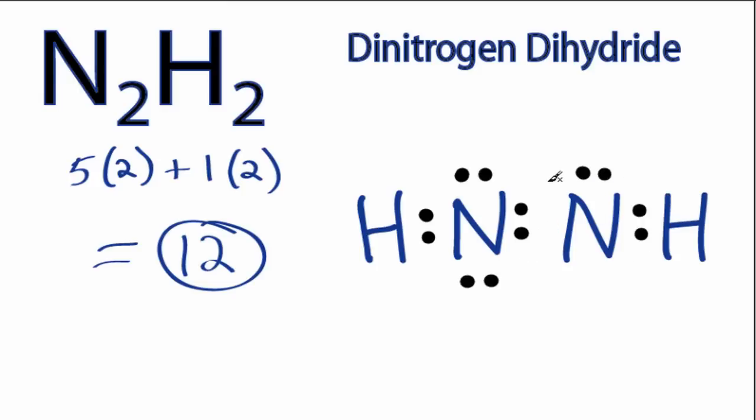At this point, this nitrogen has an octet, but this nitrogen right here only has 6 valence electrons, so it needs 2 more. What we can do is take these 2 valence electrons here and move them to the center to form a double bond.